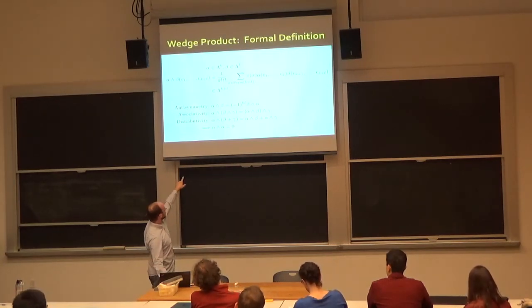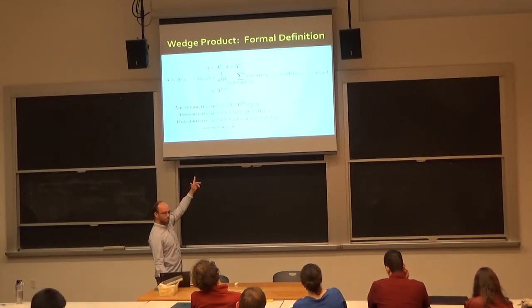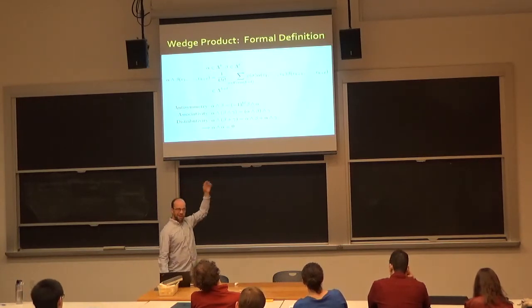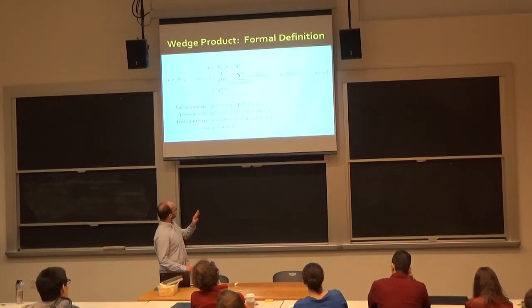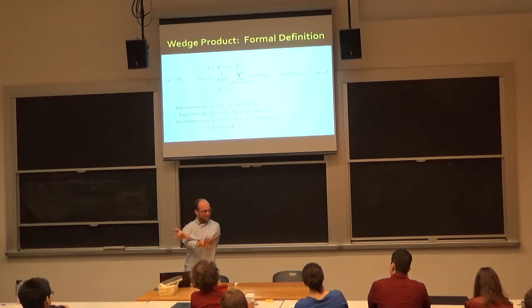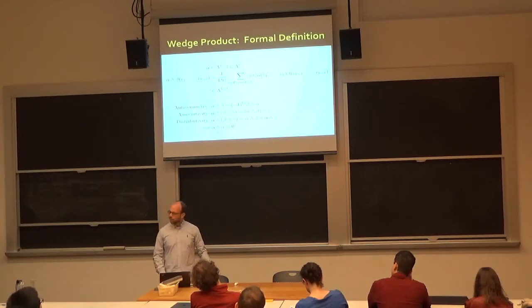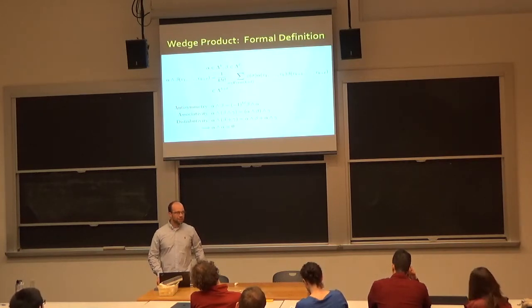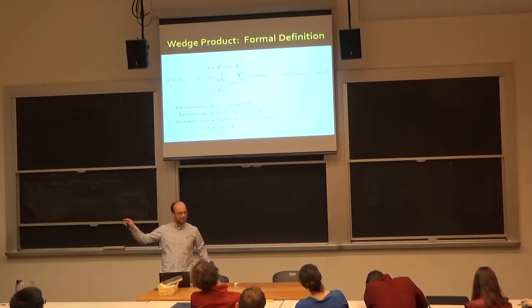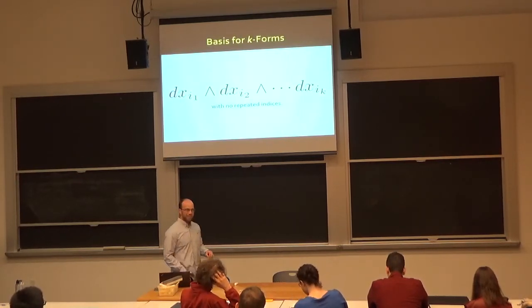The wedge product is associative, distributive, and if you wedge something with itself, you get zero — just like a cross product. We have a basis for one-forms: dx1 through dxk. For every pair, I can take their wedge, giving a basis for two-forms. For example, the basis for one-forms over R3 is dx1, dx2, dx3. The basis for two-forms consists of wedges of every pair: dx1 wedge dx2, dx1 wedge dx3, and dx2 wedge dx3 — three elements total.